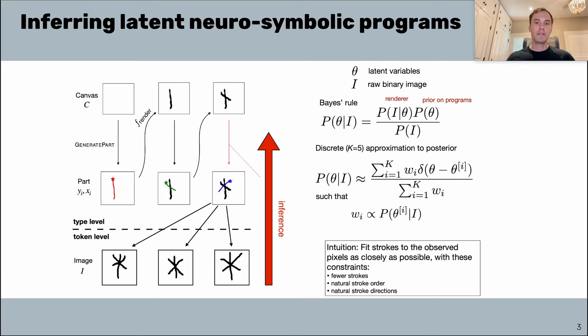The GNS model represents the forward generative process for how characters are produced from latent motor programs. We use Bayesian inference to work backwards through that generative model and to reason about the most likely motor programs given an observed character image.